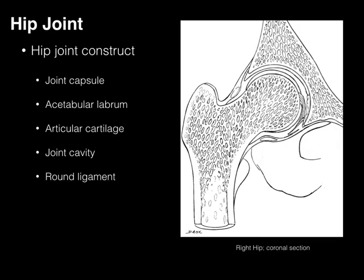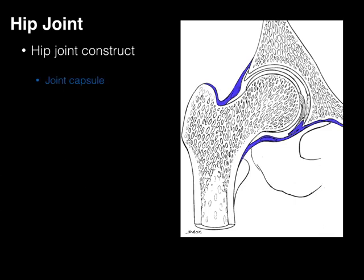If we take a coronal section through the right hip, we'll notice that the hip joint in its synovial construct is similar to other synovial joints. It has a joint capsule — dense irregular collagenous connective tissue — that is really the extension of the periosteum from the os coxa and continuous with the periosteum on the femur. It surrounds the entire circumference of the hip joint. Lining the inside of the acetabulum is the labrum, made of fibrous cartilage.